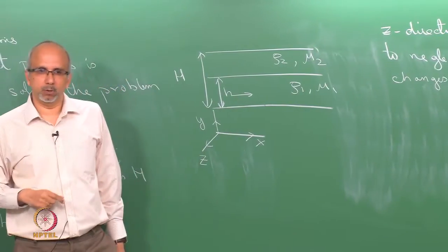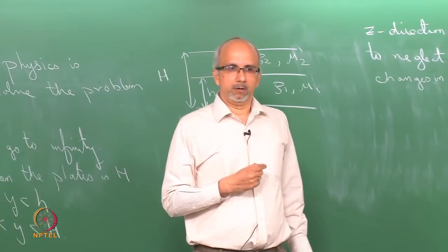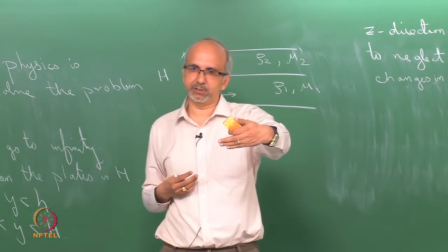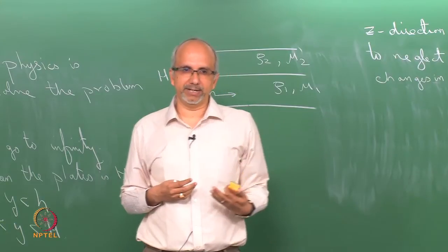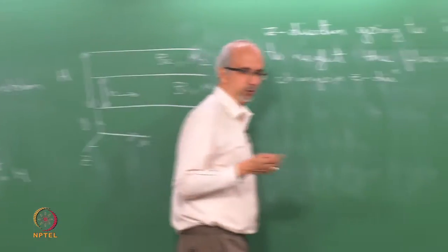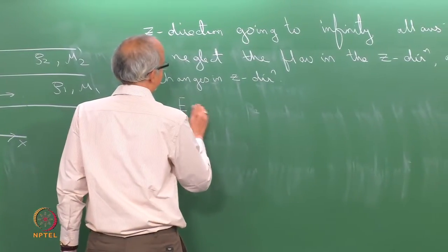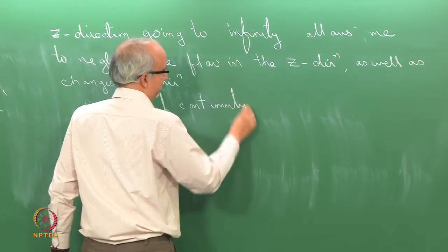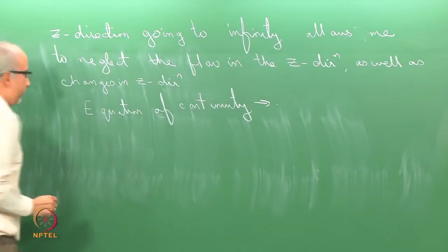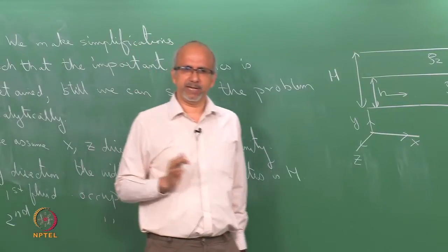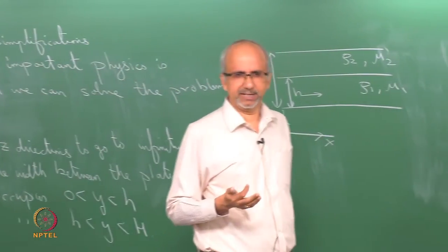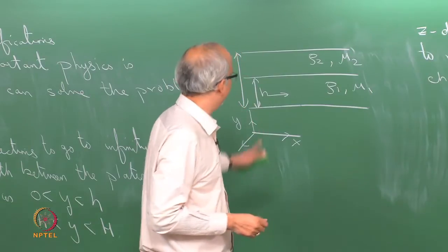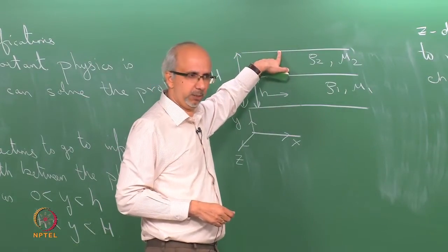Let us understand which velocity component is going to be important. We have simplified things by saying that in the z direction things do not change. So we focus only on the x and y directions. We begin with the equation of continuity — since we are looking at liquids, they are incompressible with no changes in density — and we write this equation for each phase separately.